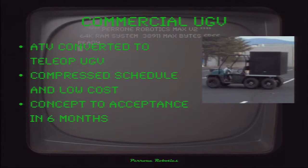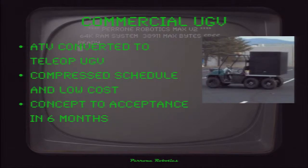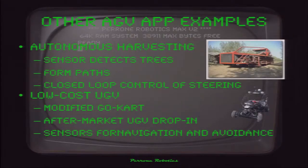We also had a Polaris Ranger — a teleop application on a very compressed six-month schedule. We had to get this ATV, drop in actuators, and there was a little box on the back with a scissor lift. We made this six-wheeler autonomous fairly quickly, leveraging the same libraries we had used for the Grand Challenge. We also built an autonomous harvester, modified a go-cart.